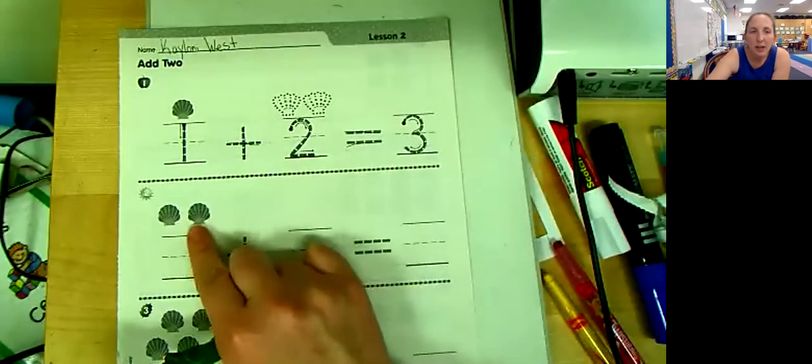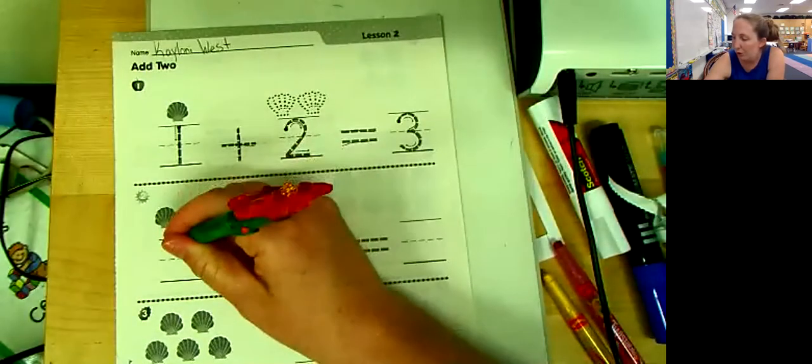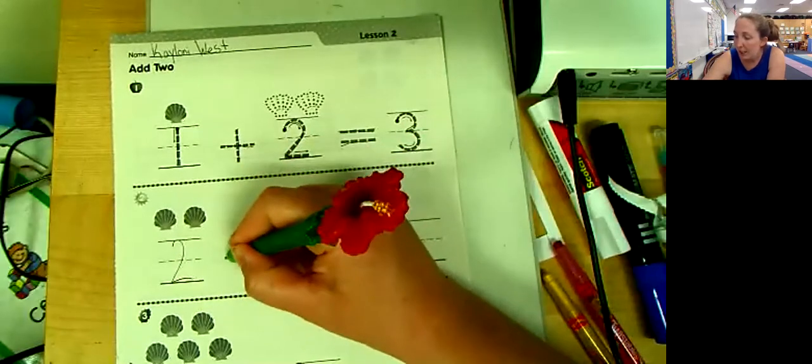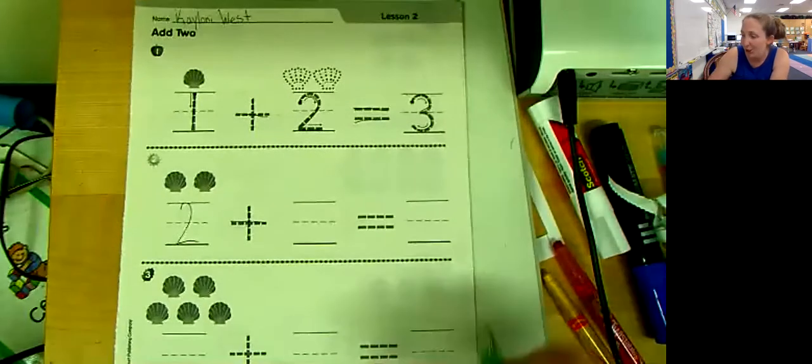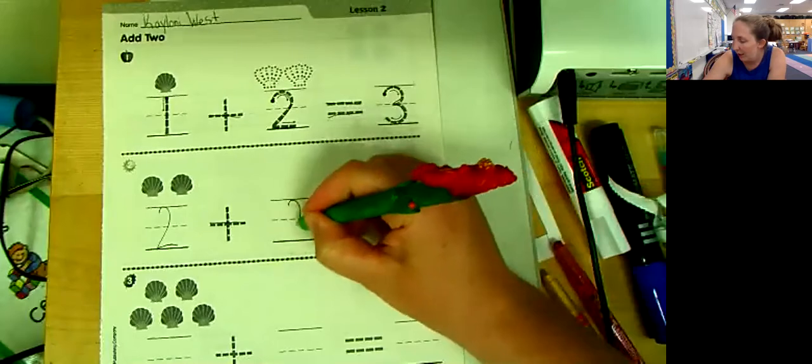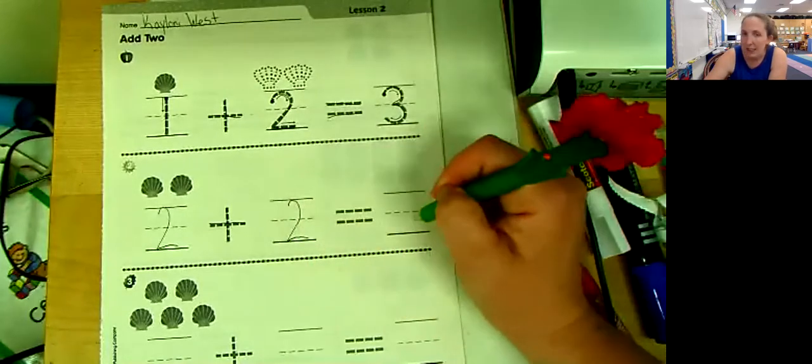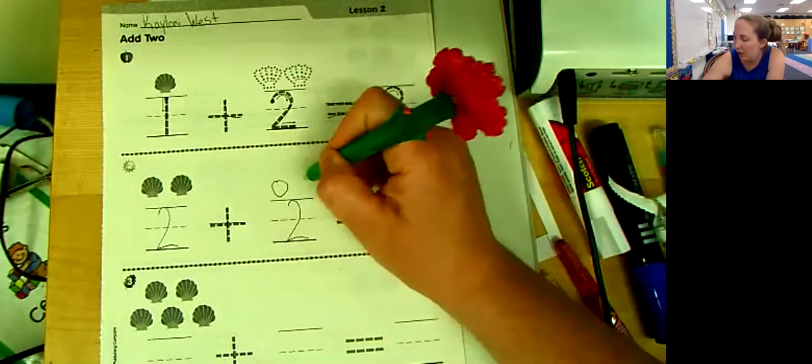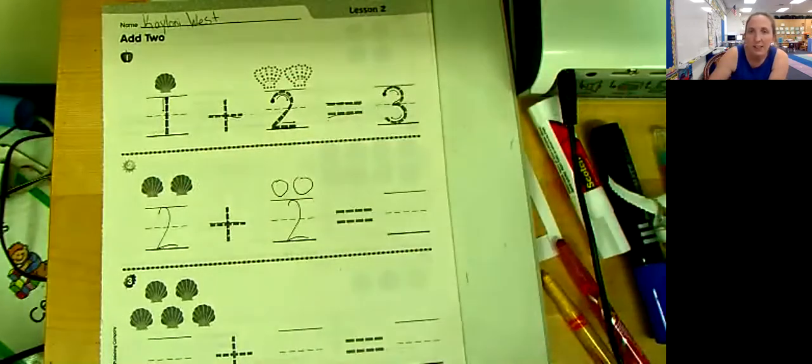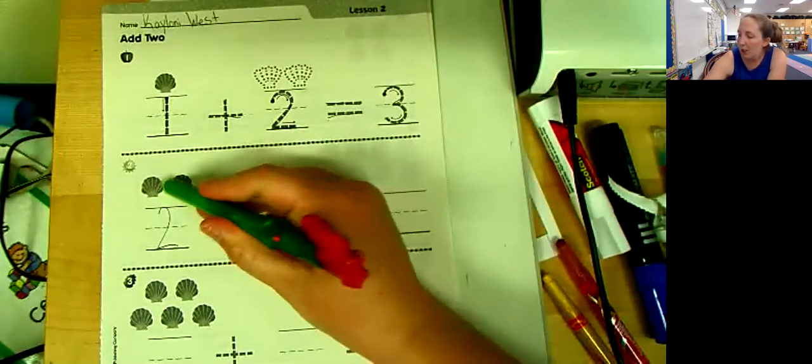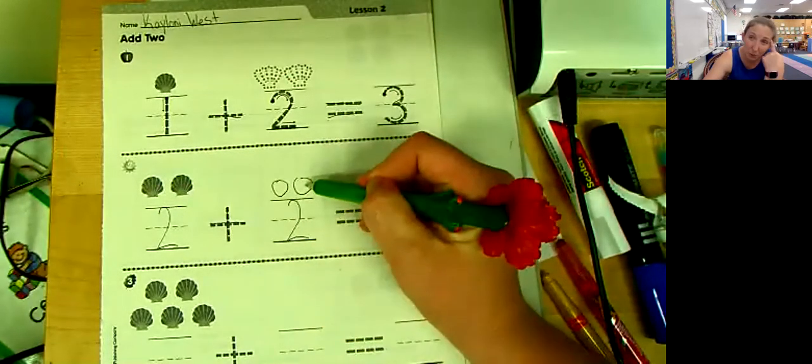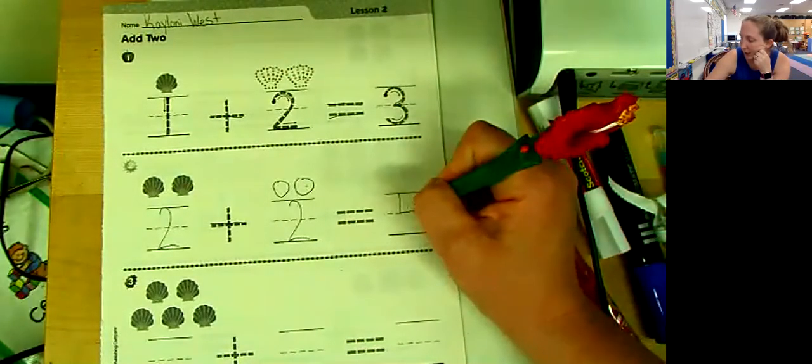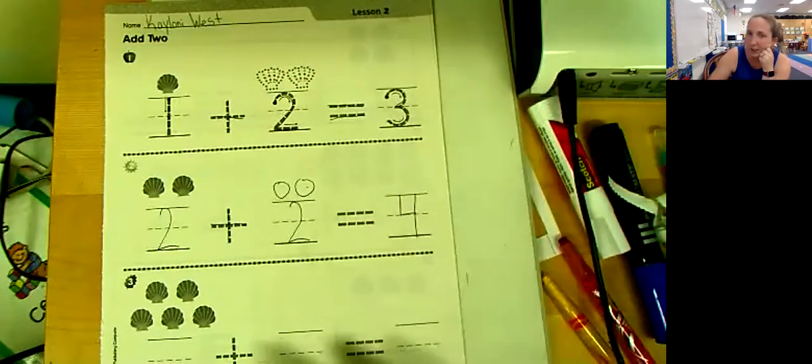So how many shells do we have here? We have two. And we're going to, what did I tell you we're going to plus for each one? Two. We're going to plus two. And we need to find the answer. So we have two shells here. I'm just going to draw two circles here to represent two more shells and I can count them all together: one, two, three, four. Or I can just remember two plus two is four. All right.